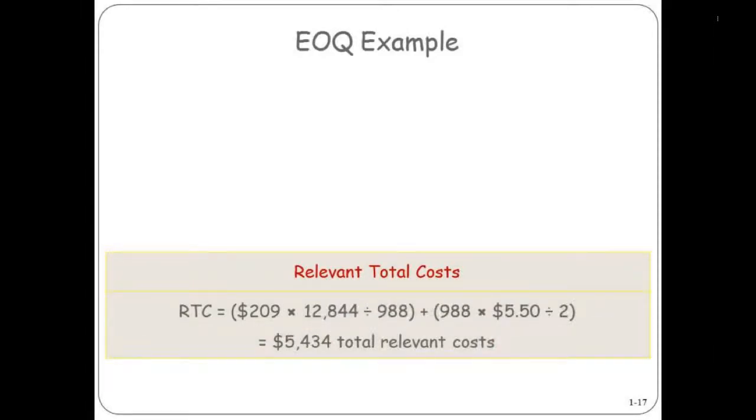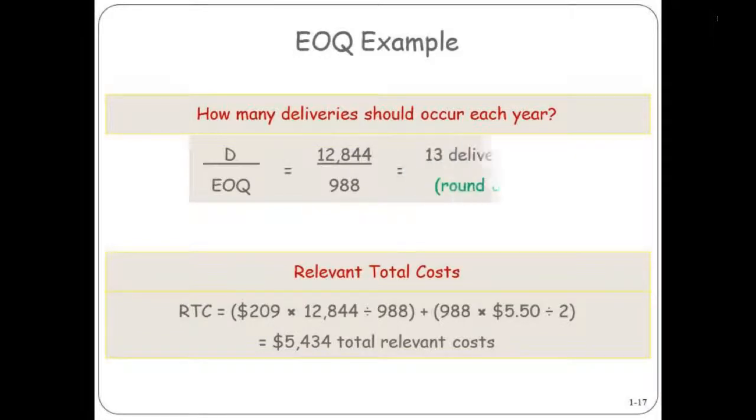At that level, how many deliveries should you have each year? You divide 12,844, the total number of videos you expect to sell in a year, by 988. That means you need to have 13 deliveries in the course of the year.